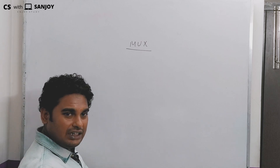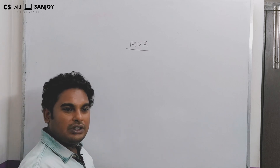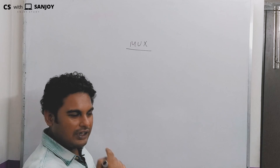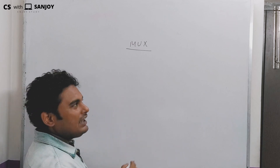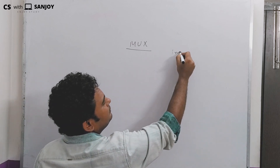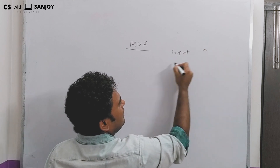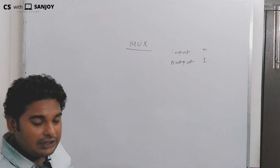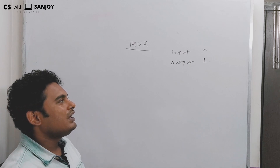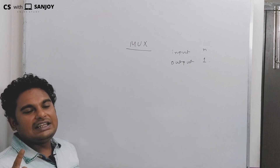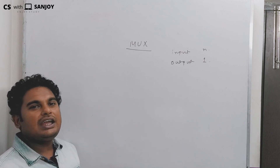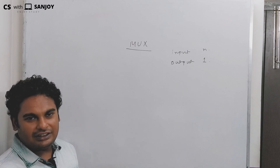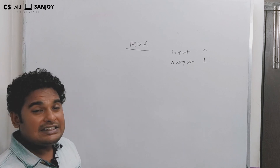Mux is a combinational circuit which takes N inputs but gives only one output — only a single output. Multiplexer: input N, output 1. We have to select the input and redirect it to the output.